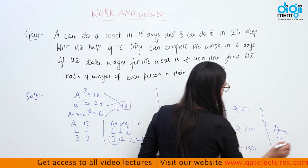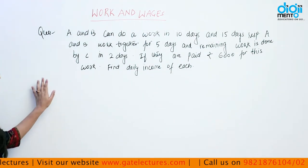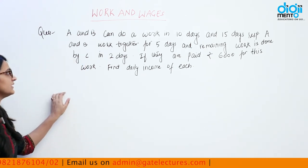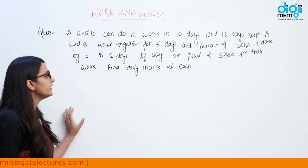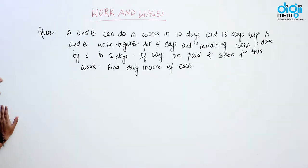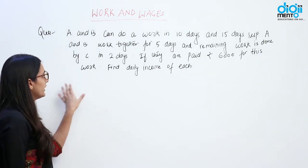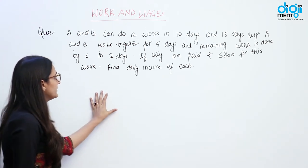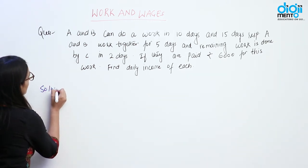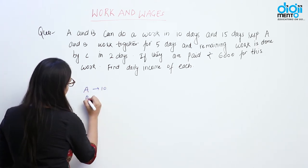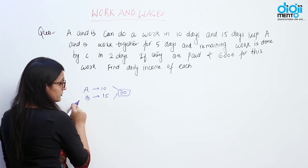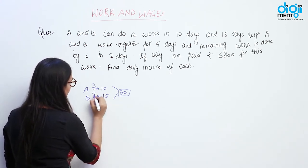The next question: A and B can do a work in 10 days and 15 days respectively. A and B work together for 5 days and the remaining work is done by C in 2 days. If they are paid Rs. 6000 for this work, find the daily income of each. A does the work in 10 days, B in 15 days. Both worked together for 5 days, then C completed the remaining work in 2 days.